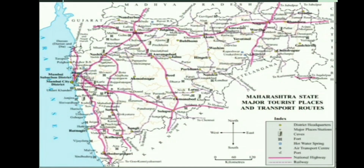Now look at this map. This is a Maharashtra state map showing major tourist places and transport routes. Here the four main directions are given. In the index, all the symbols and the main parts are given. Then the scale is given here. Now in this map, we are going to learn about the tourist places.